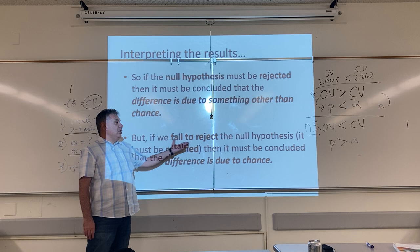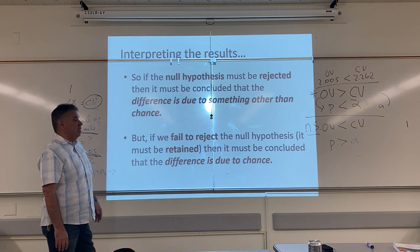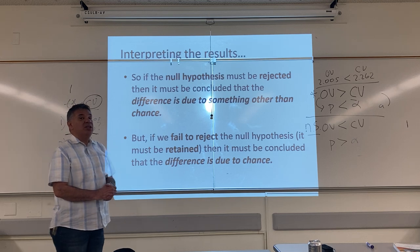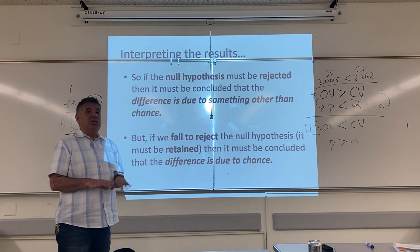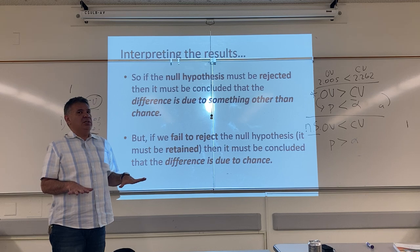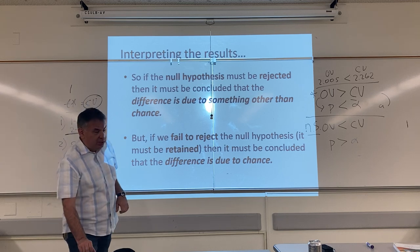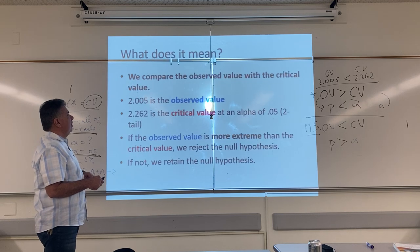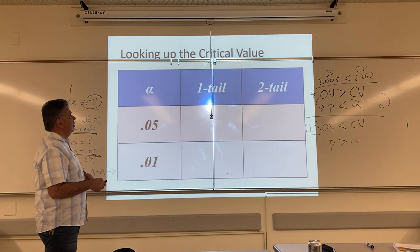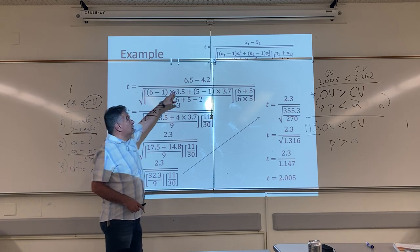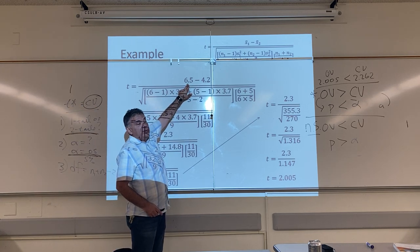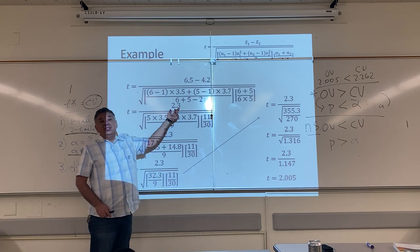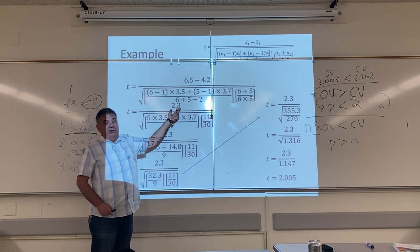But if we fail to reject the null hypothesis — in other words, we retain it — we're continuing to believe that there is no difference between the groups. Well, if there is no difference but we found a difference, where did we find a difference? We found a difference here — this is the mean of the first group and this is the mean of the second group, and this answer is not zero. So there is a difference.